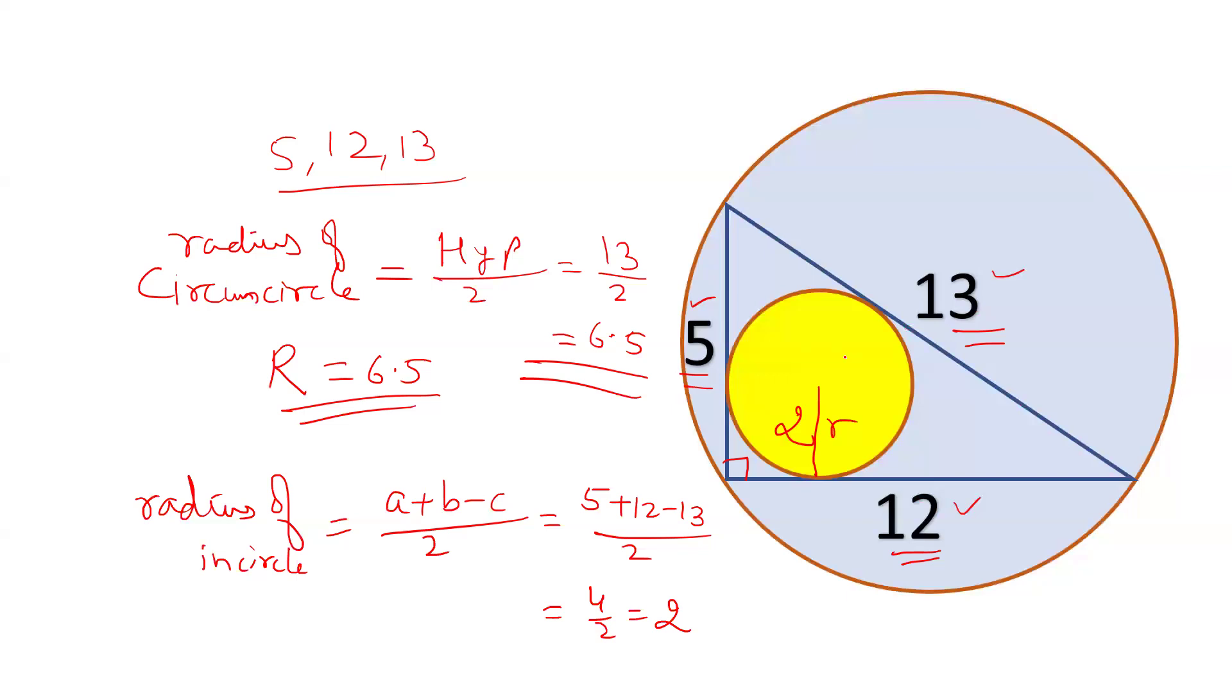So the radius of the incircle is 2, and the radius of the circumcircle is half of the hypotenuse, which is 6.5. I hope friends you liked this video. For this kind of fast approaches, please go through our videos.